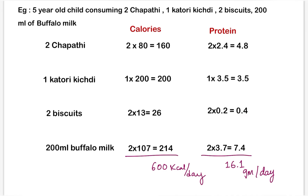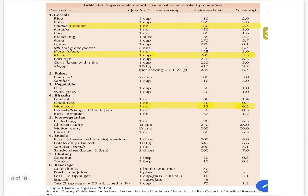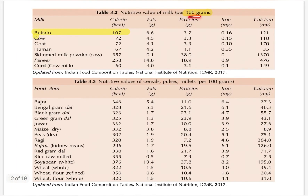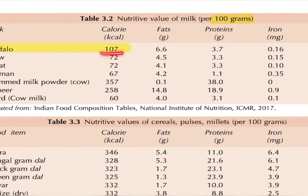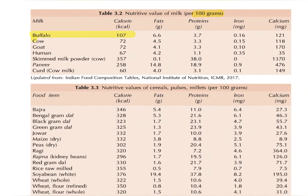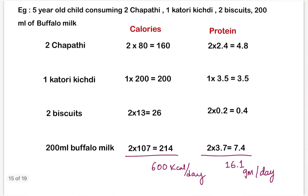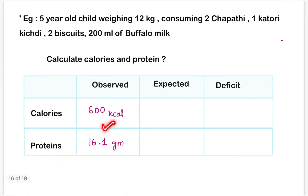For buffalo milk: per 100 grams, 107 kcal and 3.7 grams of protein. The child is taking 200 ml of buffalo milk, so 2 × 107 = 214 kcal and 2 × 3.7 = 7.4 grams of protein. In total, the child is getting 600 kcal and approximately 16.1 grams of protein per day from this diet. These observed values are written in the table.